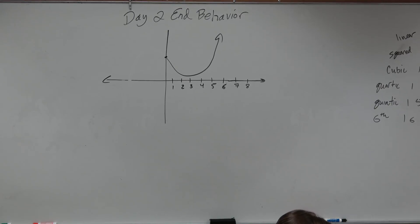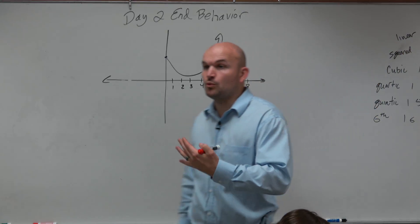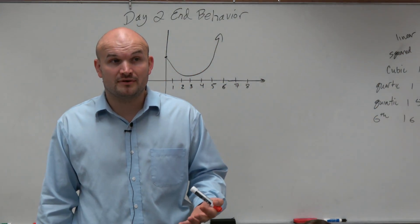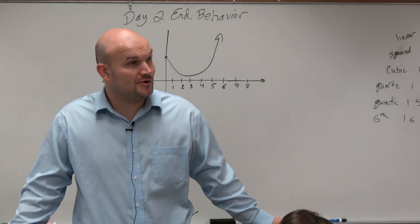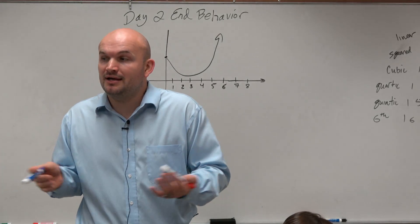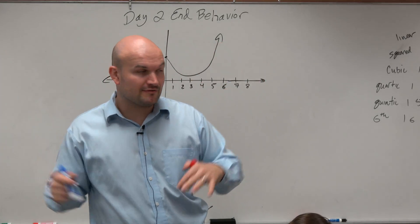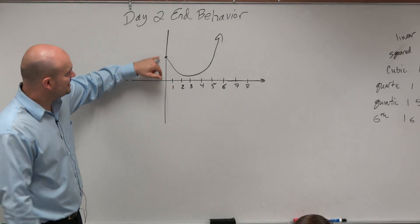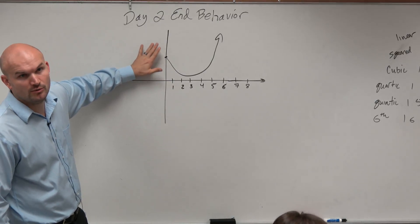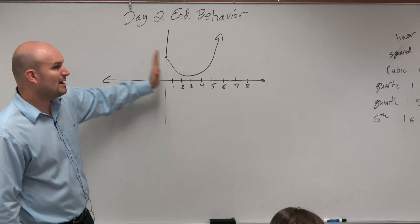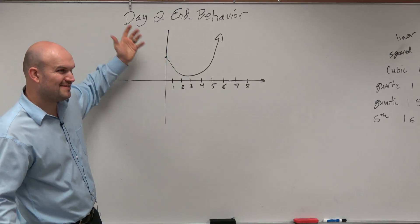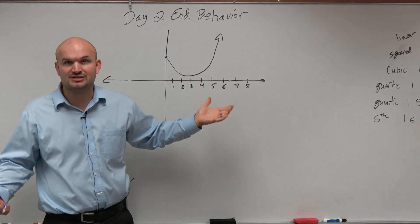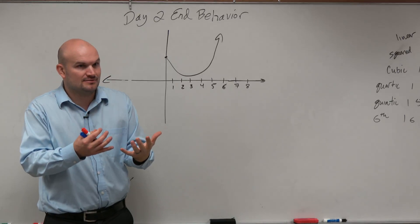So end behavior. The basic definition of end behavior is what is happening to the graph as you can't see it anymore. What is the graph doing after it expands outside of the graph? So there's a couple important things. We see here the graph stops, right? So we know where the graph is ending. So there is no end behavior going to the left because the graph has stopped. Does everybody understand and see that?